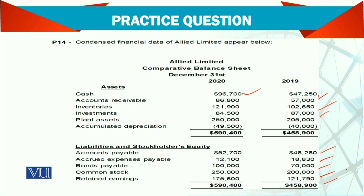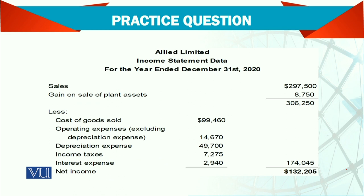This is a comparative balance sheet, and then we have a small income statement — sales, and a gain on sale of part of plant sold during the period, so gain is added to income. Then cost of goods sold, operating expenses excluding depreciation because depreciation is given separately, income tax, and interest.